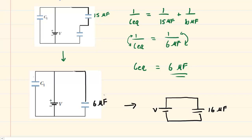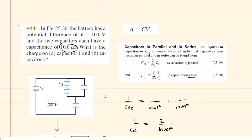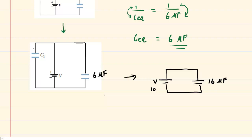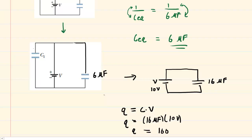The potential supplied by the battery is given in the question as 10 volts, so we're going to mark that down. Once you simplify the circuit down to a single equivalent capacitor, you want to calculate the charge. Charge equals capacitance times potential difference. So we take our equivalent capacitance of 16 microfarads, multiply by 10 volts, and we get a total charge of 160 microcoulombs.